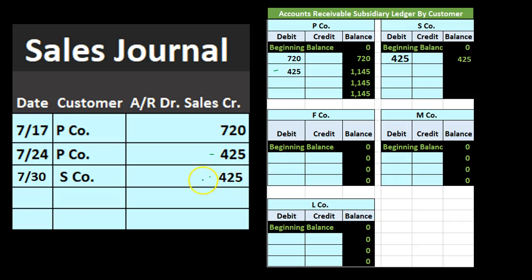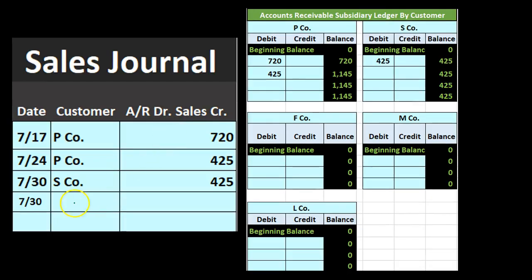Note that if anything varies from a straightforward sale on account — anything other than debiting accounts receivable and crediting sales — it will not go in the sales journal. A cash sale, for example, would not go here since this journal is really an accounts receivable or sales-on-account journal. On 7/30, M Company made a sale for 500, which we record to the subsidiary ledger. Summing the entire sales journal: 720 + 425 + 425 + 500 gives us a total of 2,070.